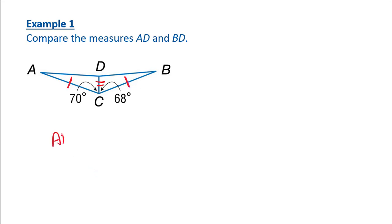So I need to compare AD and BD. Well, angle ACD is 70 versus DCB is 68. So the larger angle is going to give me the larger side.